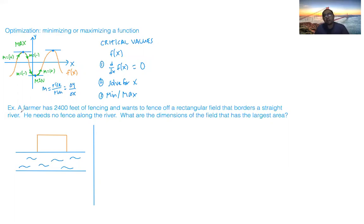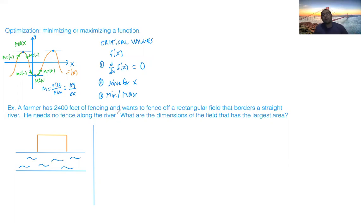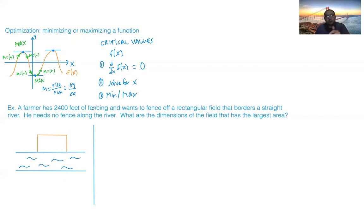Today we're going to use this concept in a word problem. The number one tip for word problems is: first, draw out what the word problem is describing if possible, and second, read through the problem and sift out useful information.